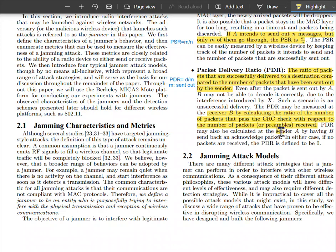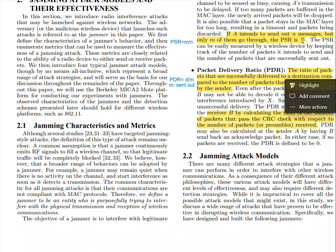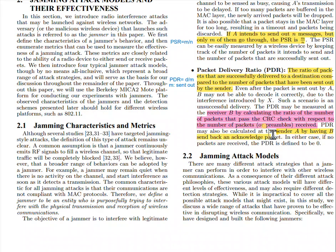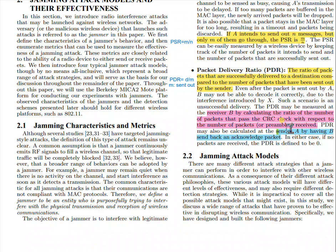At the sender — let's use a different color, blue — sender A measures PDR by having B send back an acknowledgement packet. So the sender measures via acknowledgement packets, and the receiver measures by looking at the preambles it has — the sent-out packets or preambles.